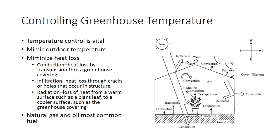The main reason for using greenhouses is for controlling temperatures. Good temperature control is important to maintain high-quality crops. The daytime temperature in greenhouses is typically 10 to 15 degrees higher than nighttime temperatures, which are generally between 55 and 65 degrees Fahrenheit. Heat loss through conduction, infiltration, and radiation must be minimized. Conduction is heat loss through a greenhouse covering; infiltration is heat loss through cracks or holes; and radiation is the loss of heat from a warm surface, such as a plant leaf, to a cooler surface such as the greenhouse covering.